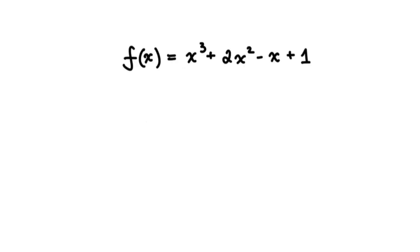The degree of the polynomial function is determined by looking at the term with the highest exponent. In this case, we see that the highest exponent is 3. Therefore, the degree of this polynomial function is 3. The degree matches the maximum possible number of x-intercepts that the function has — for example, this function could have up to and including 3 x-intercepts.